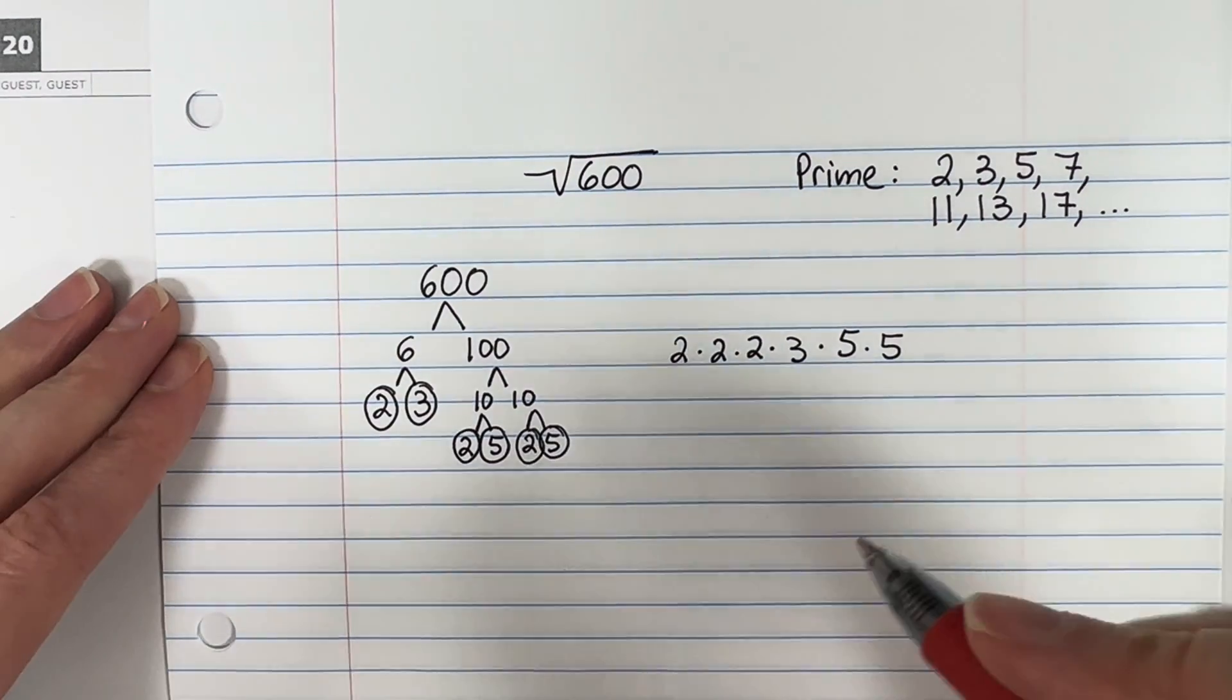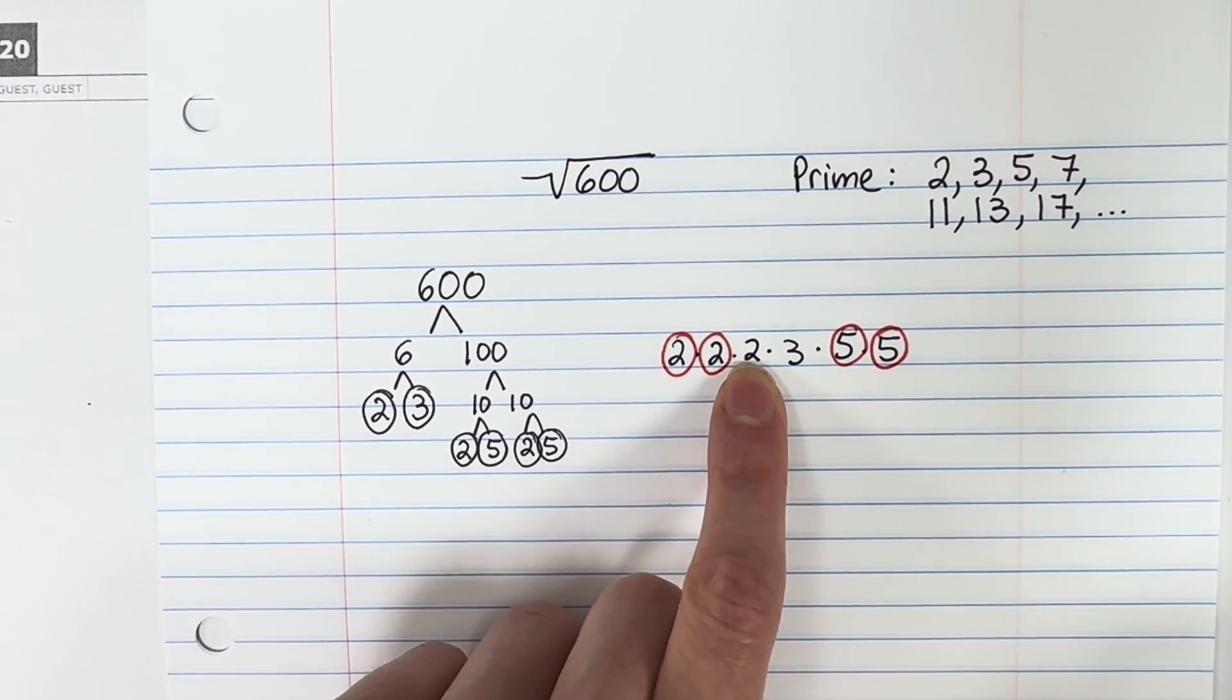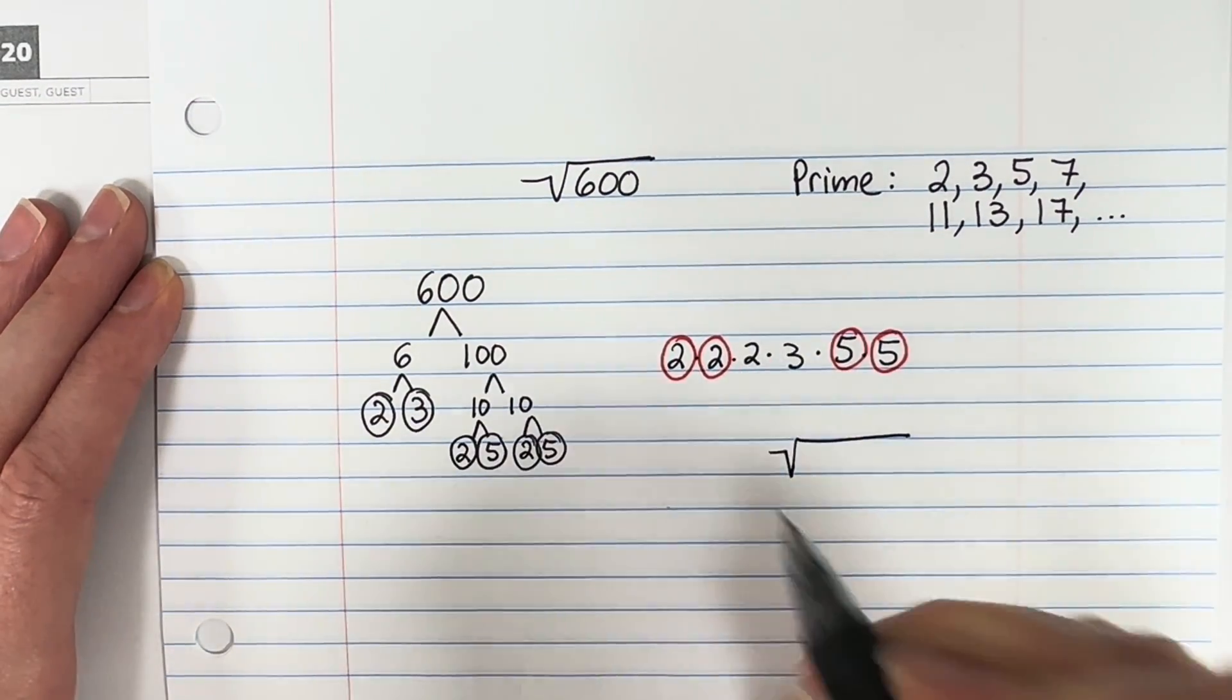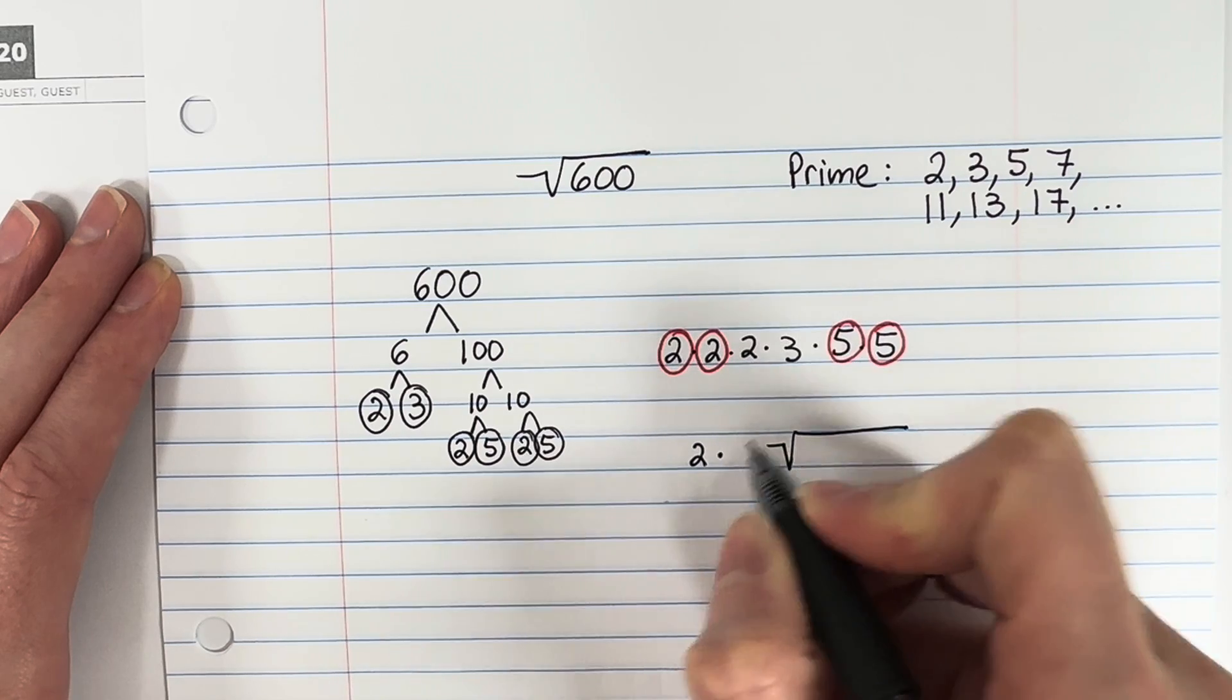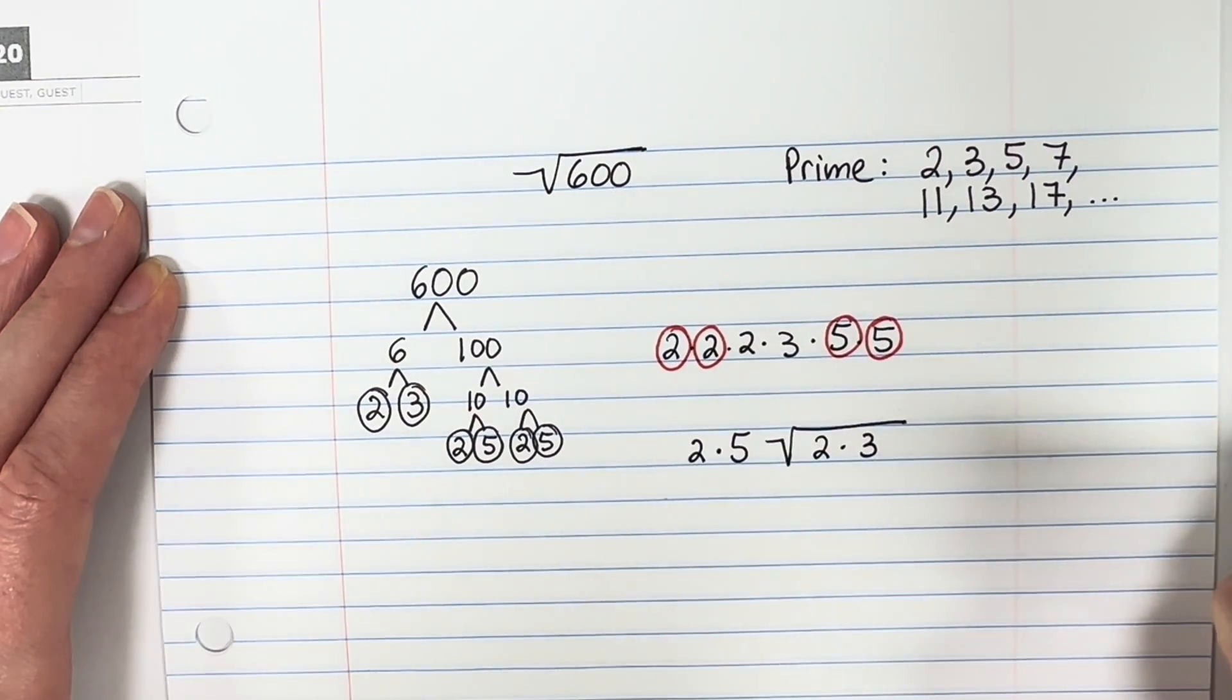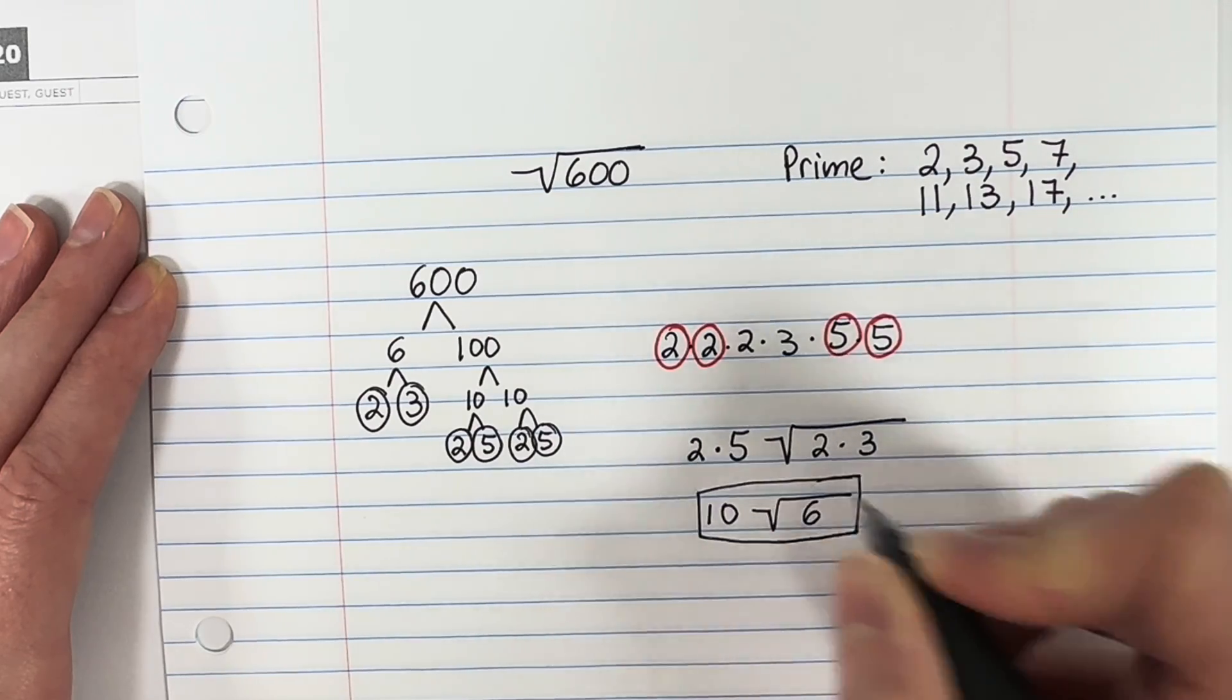Let's find the pairs now. Which ones have a pair? So here's a pair. Here's a pair. This 2 does not have another partner, and this 3 does not have another partner. So what you're going to do is you're going to write your square root. If it has a pair, you're going to make it 1, and you're going to put it outside. So 2 times 5. Just 1. If it doesn't have a pair, you're going to put it inside. 2 times 3. 2 times 5 is 10. Square root. 2 times 3 is 6. That is your answer there.